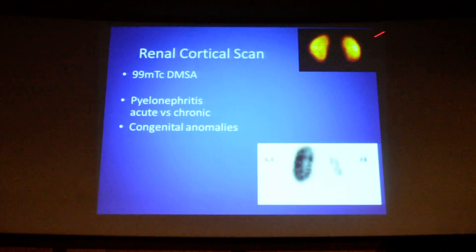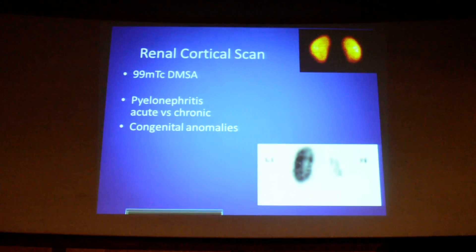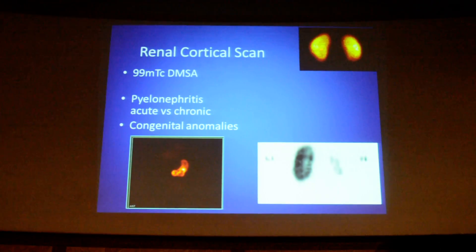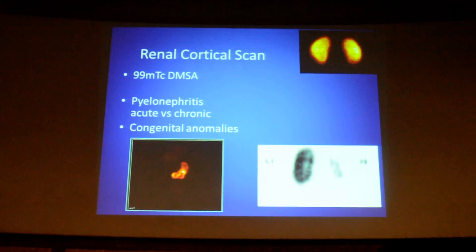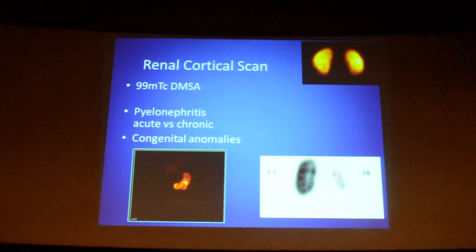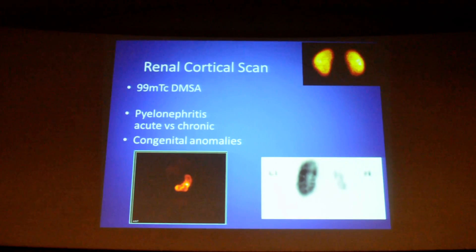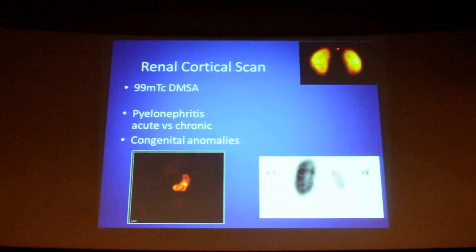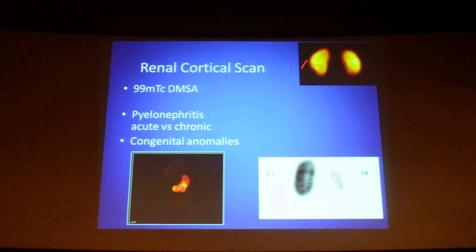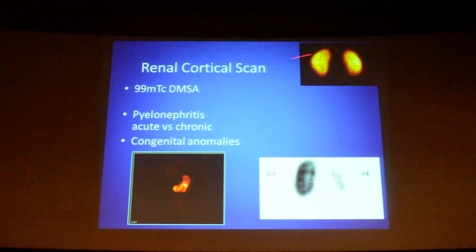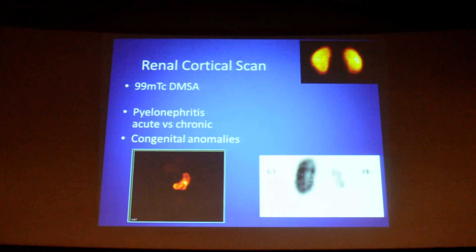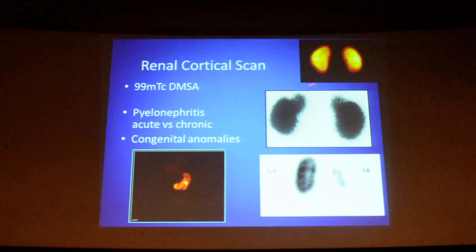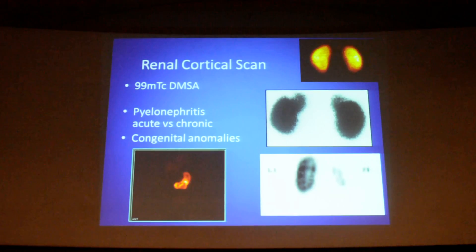Acute versus chronic. Uniform distribution of tracer in both kidneys is normal. You can see the difference from the previous DTPA images — there you will see cortical uptake and the pelvicalyceal system drainage. Here the tracer is fixed in the cortex. This is DMSA, which is used for cortical imaging. Any defect in the periphery is either a scar or a pyelonephritic focus.